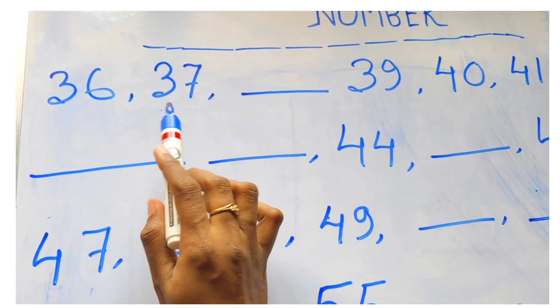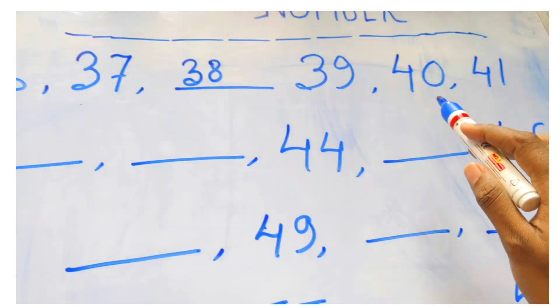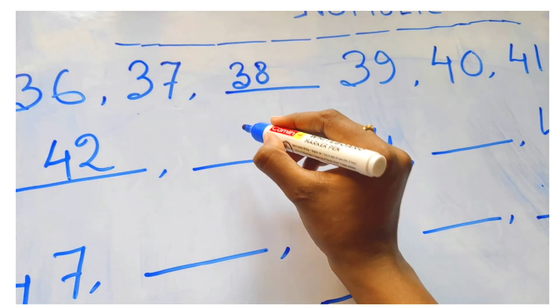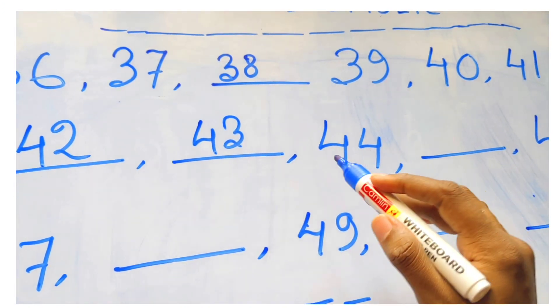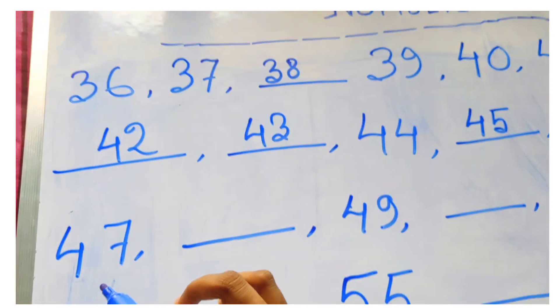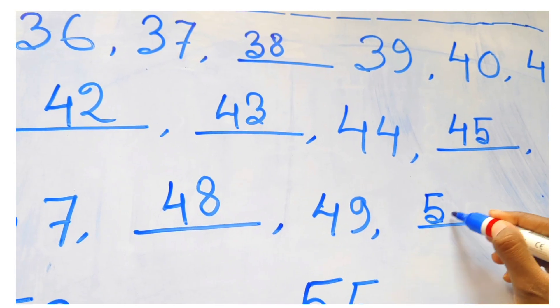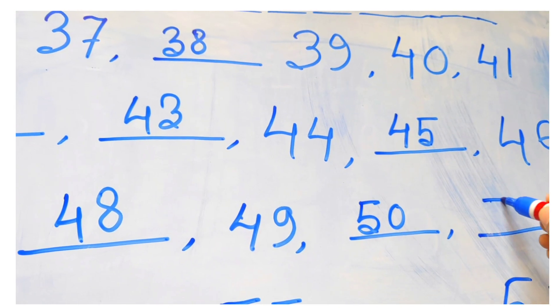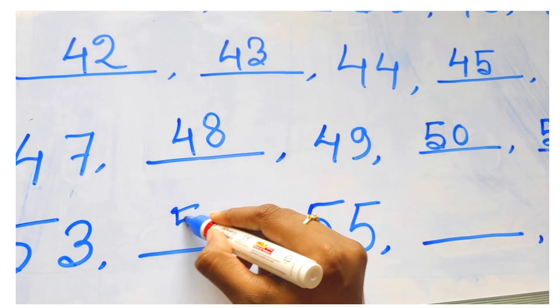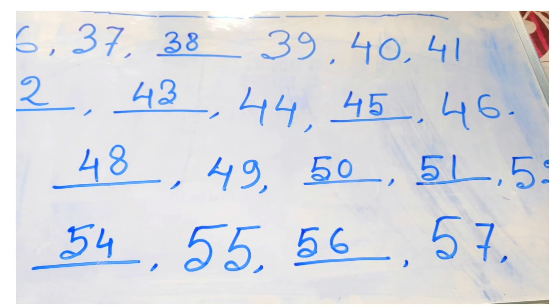Next, 36, 37, here, yes, 38. Next, 39, 40, 41, here, 42, very good. Next, 43, very good. Then 44, here, 45, good. 46, 47, 48, 49, 50, here, 51, 52, then 53, 54, 55, 56, 57. Now, repeat once more.